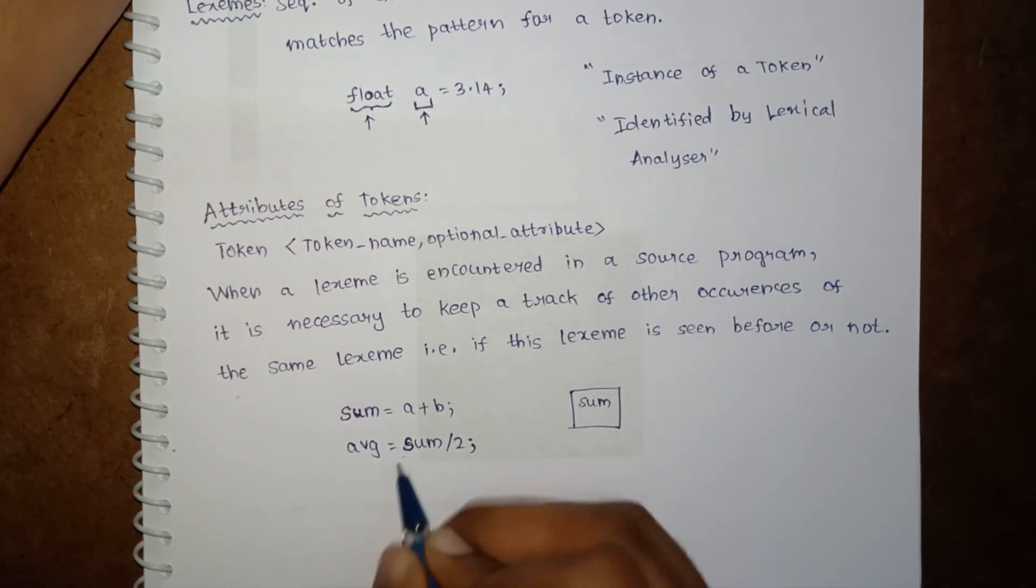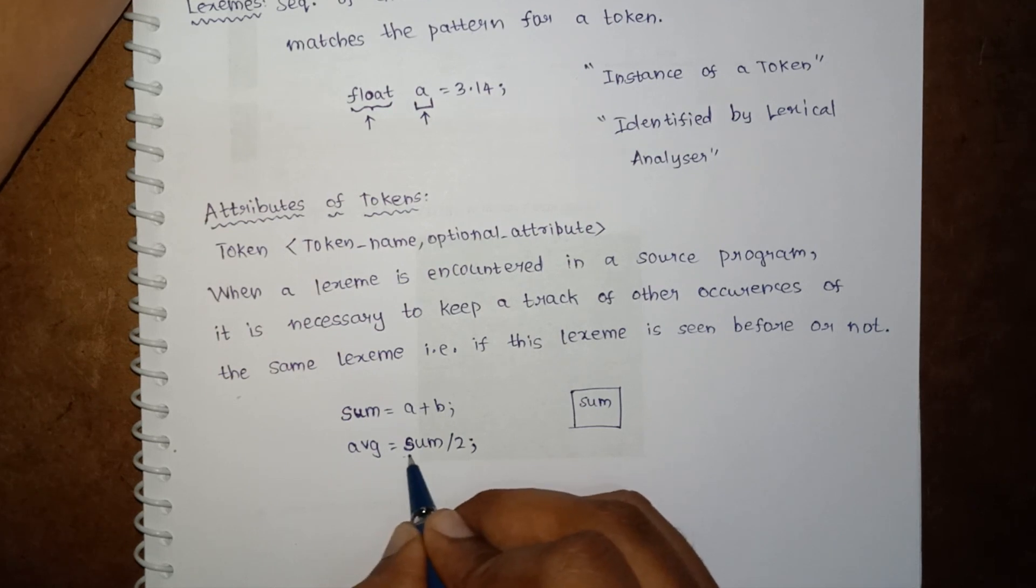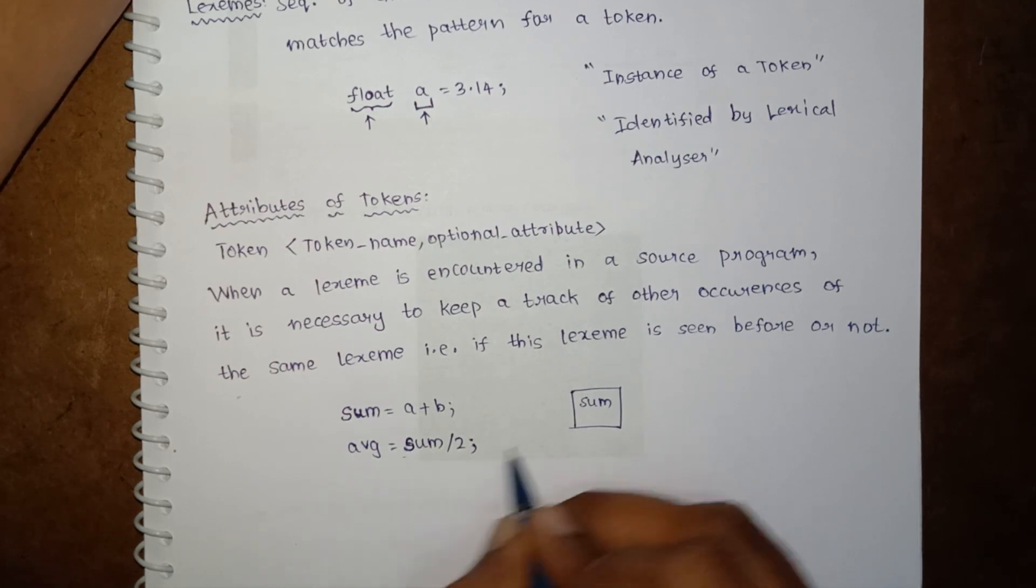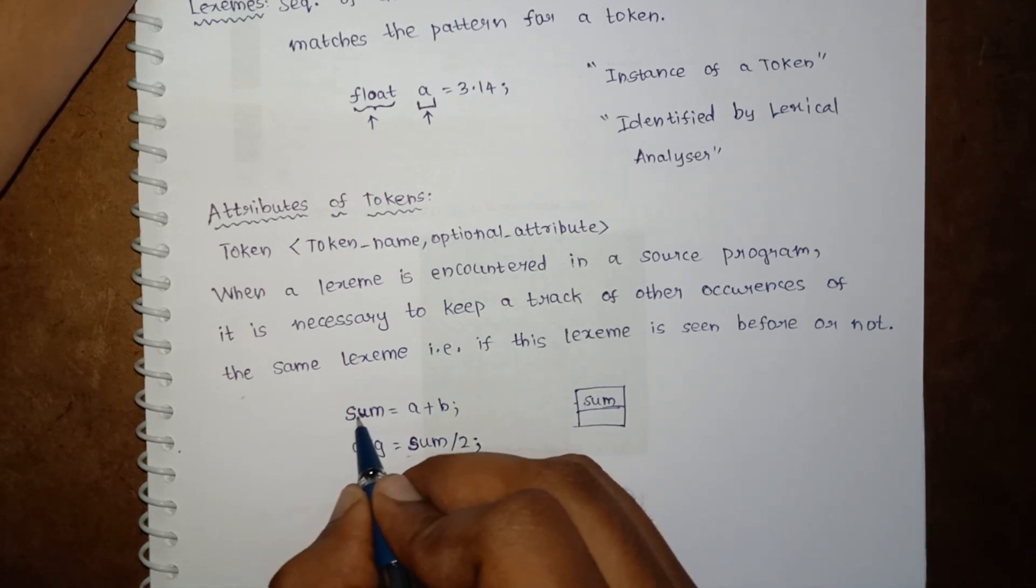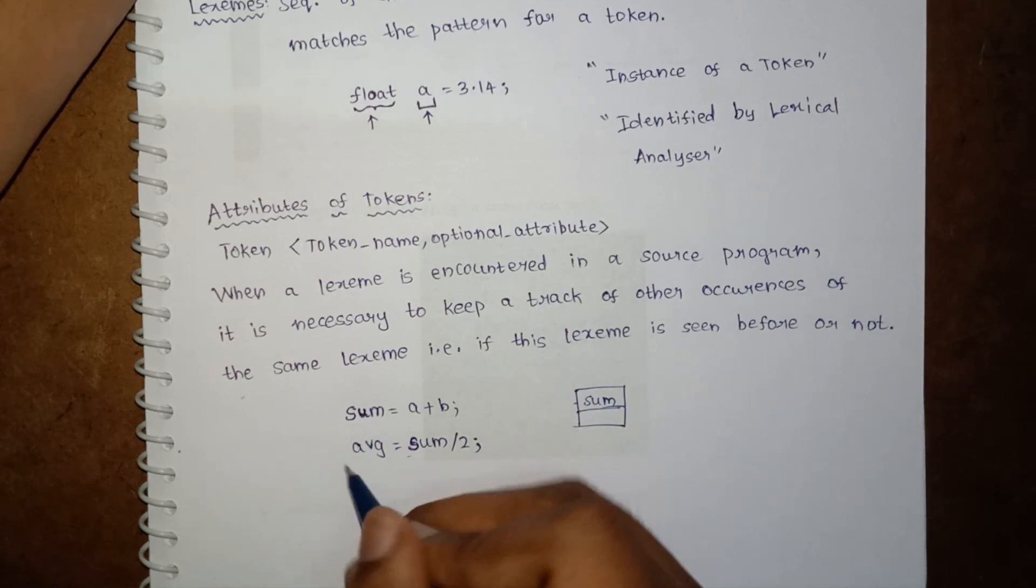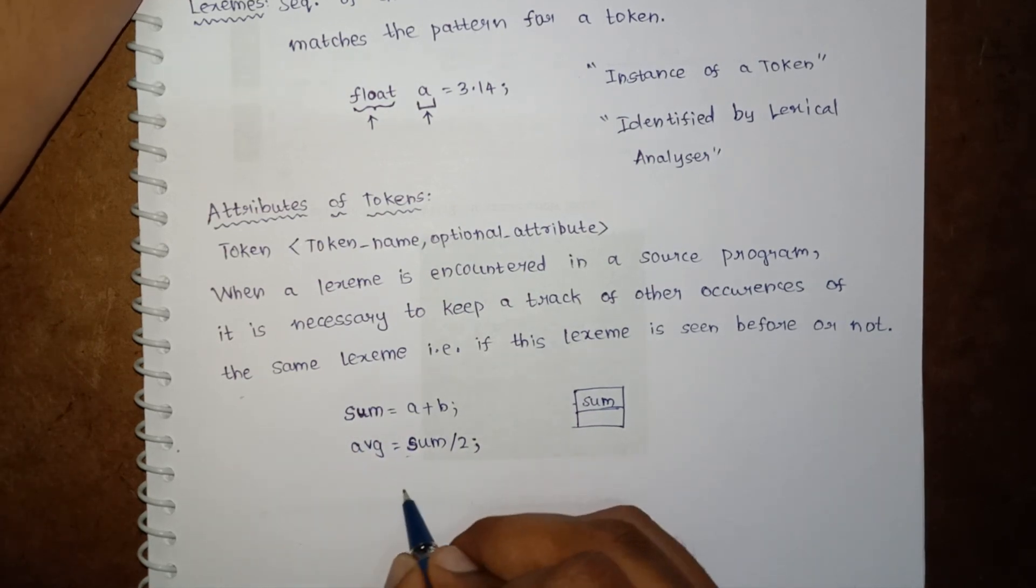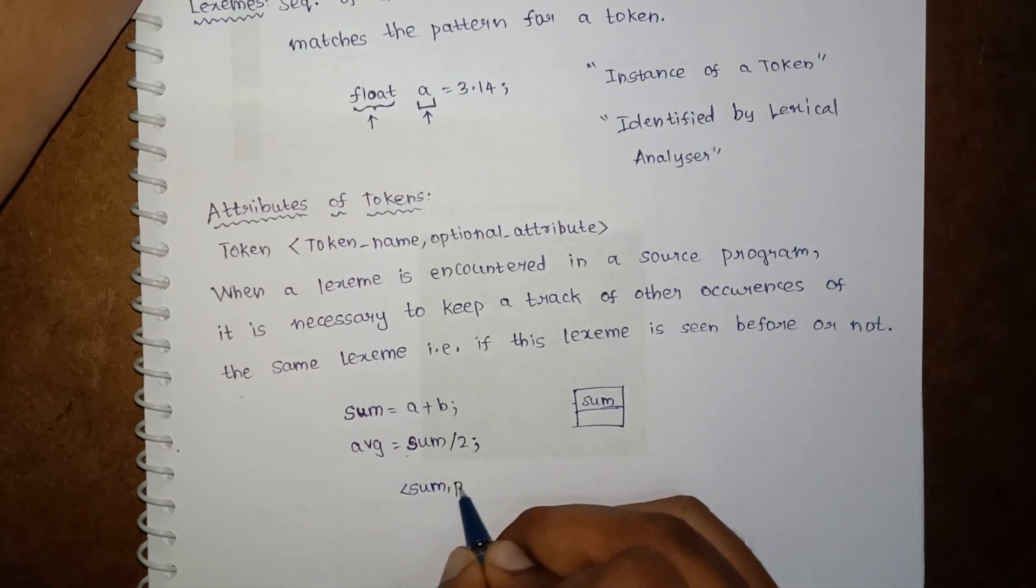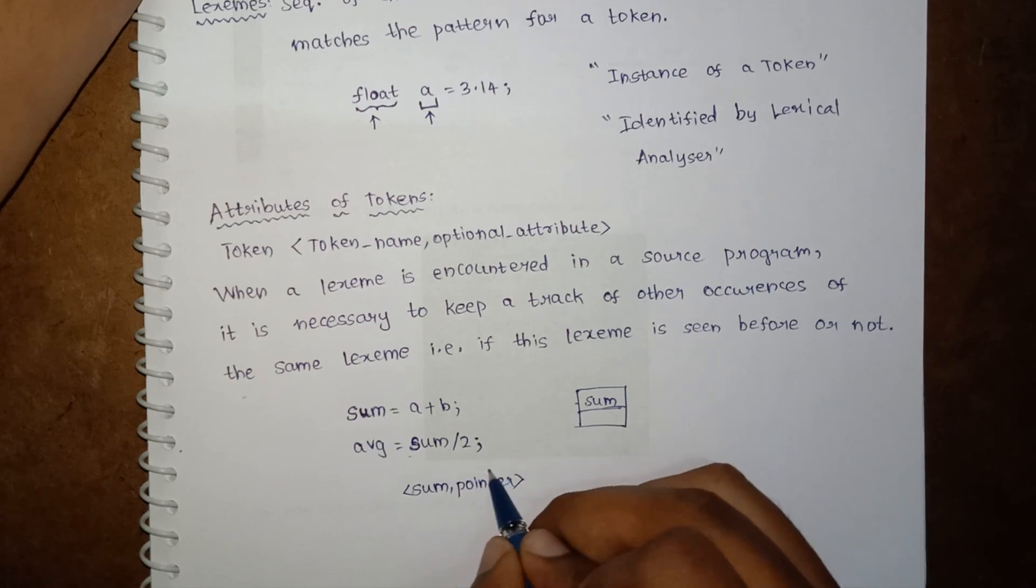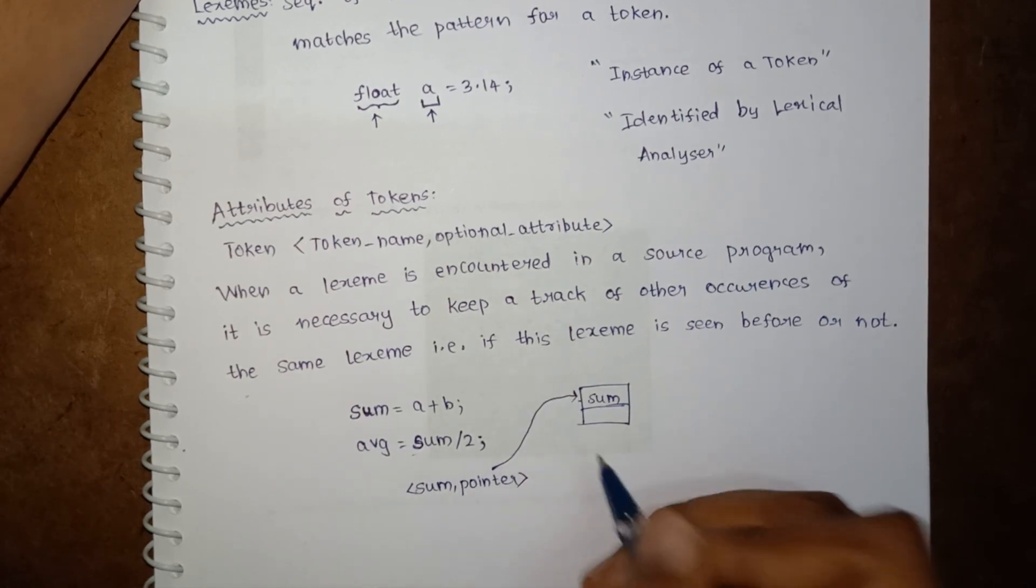So when the compiler comes to this sum, it should automatically get note of the previous sum, or where we used the sum before in this program. So this we can write as the token pair - this pointer points to the sum in the symbol table.